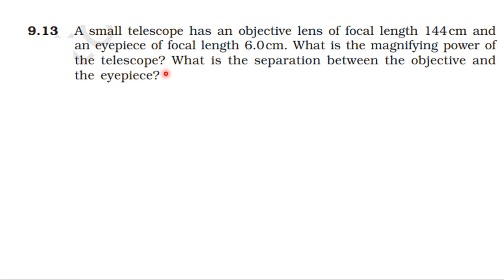From the NCRT textbook, from the topic Ray Optics and Optical Instruments, I will tell you problem 9.13. A small telescope has an objective lens of focal length 144 cm and an eyepiece of focal length 6 cm. What is the magnifying power of the telescope? What is the separation between the objective and the eyepiece?